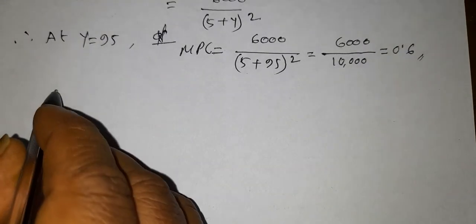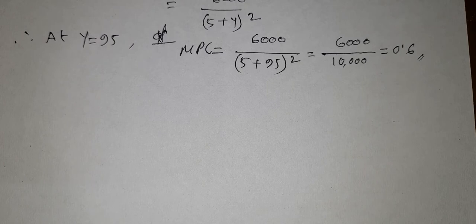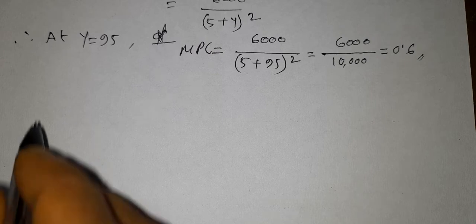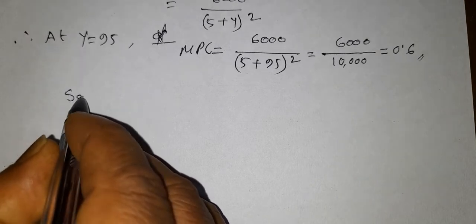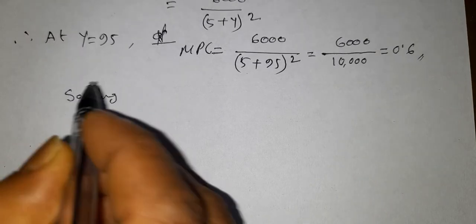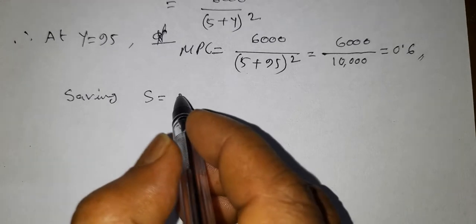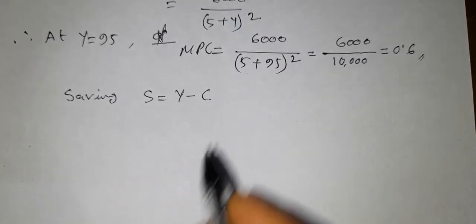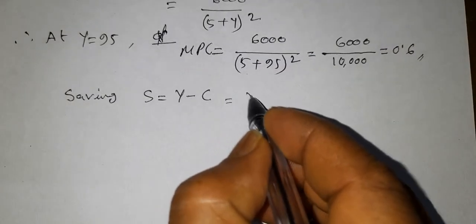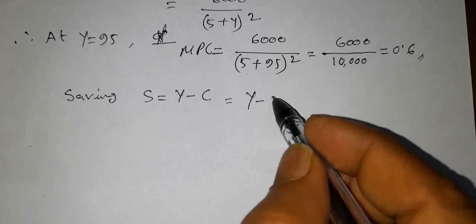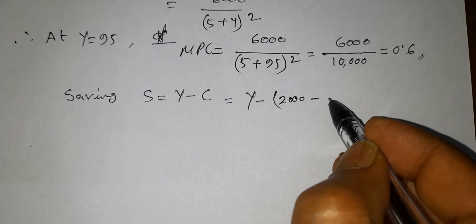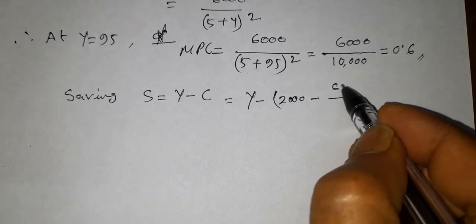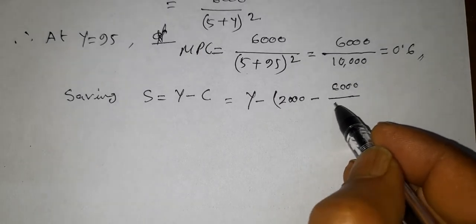Again, MPS, that is marginal propensity to save, is the rate of change in saving with respect to level of income y. The saving function s equals income minus consumption, y minus c, which equals y minus (2000 minus 6000 divided by (5 plus y)).